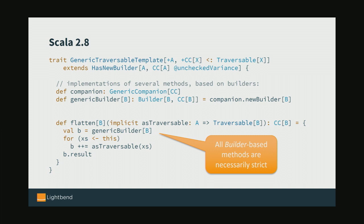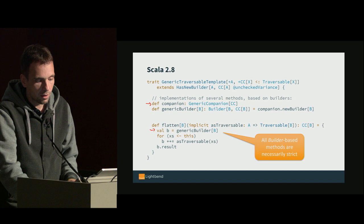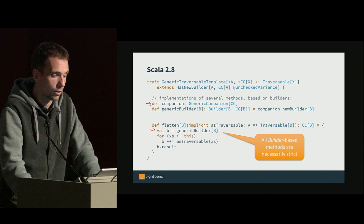GenericTraversableTemplate adds the notion of a builder — every collection type knows its companion object, the GenericCompanion. Using the companion object we can get a generic builder: for every element type B we can get a builder that lets us build a new CC of B. You can see it used in flatten: we call a generic builder of B, append to it, and call result. One limitation is that building this way is necessarily strict, so for a lazy collection type like Stream it doesn't work.